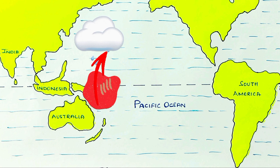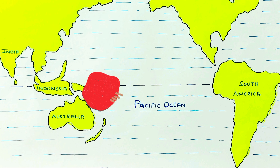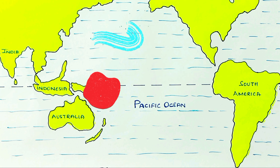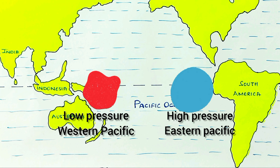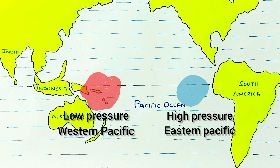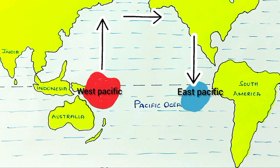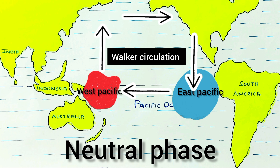This warm air, before deflecting towards the eastern Pacific Ocean, comes in contact with cold air in the troposphere. Then slowly this warm air becomes dry, and this dry air travels towards the eastern Pacific Ocean and comes down towards the Peruvian coastal region, making the eastern Pacific region cold and creating high pressure here. This process of rising air in the west and falling air in the east is called Walker circulation. This phenomenon is said to be in the neutral phase.